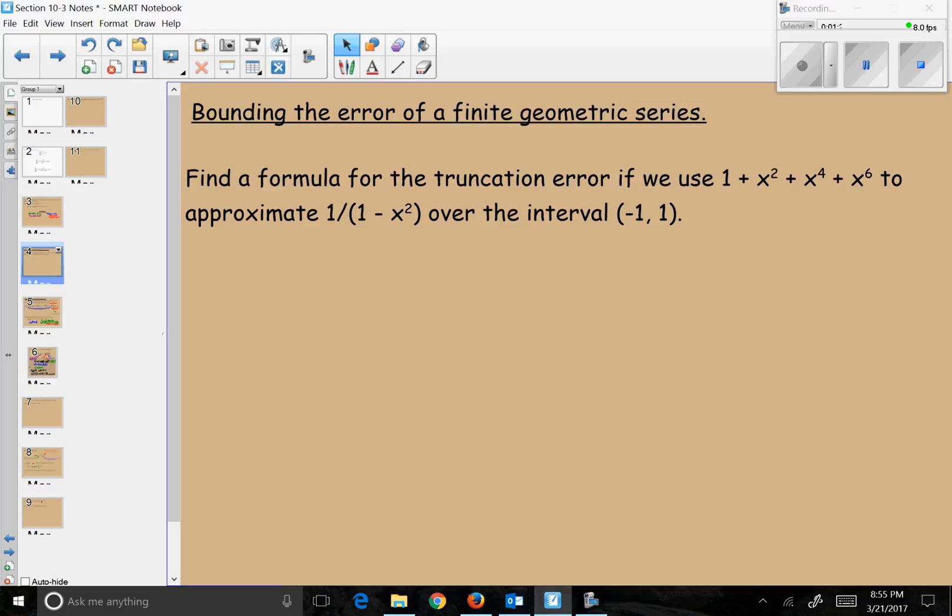If we look at a finite geometric series, such as 1 + x² + x⁴ + x⁶, this is a finite geometric series that can approximate 1/(1 - x²). The idea is if we think of this as infinite, our first term is 1, our common ratio is x², so as long as x is between -1 and 1.